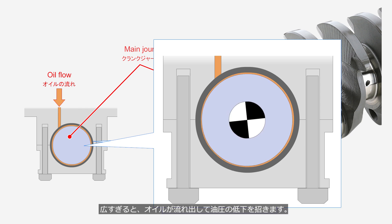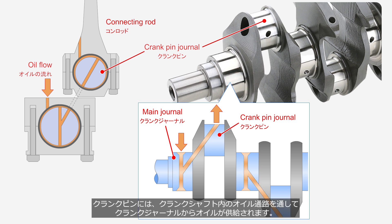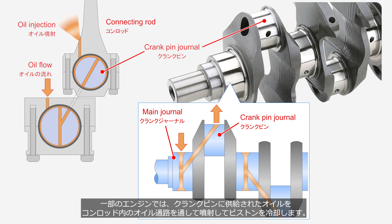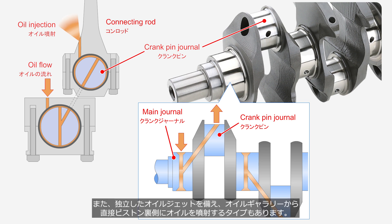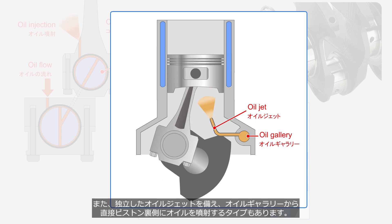If the clearance is too large, oil will escape, leading to a drop in oil pressure. The crankpin journal is the section of the crankshaft that connects to the connecting rod. Oil is supplied to the crankpin journal from the main journal through the oil passage inside the crankshaft. Similar to the main journal, the crankpin journal uses a bearing to form an oil film and provide lubrication. In some engines, oil supplied to the crankpin journal is injected through oil passages in the connecting rod to cool the piston, while other engines use dedicated oil jets that spray oil from the oil gallery toward the backside of the piston.